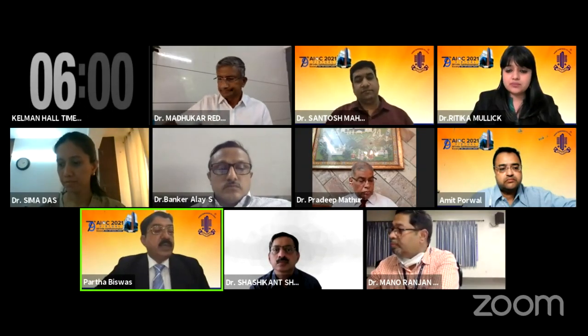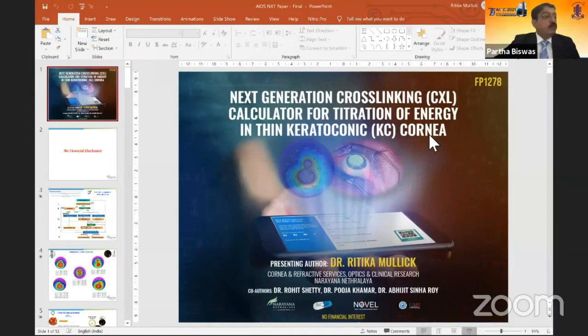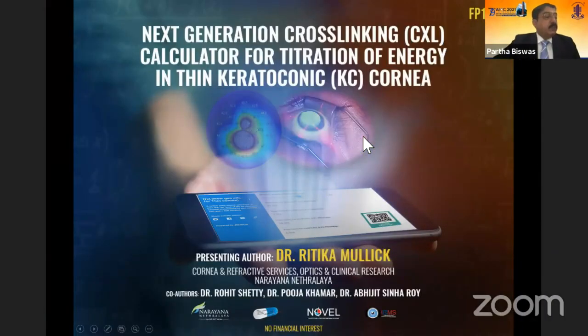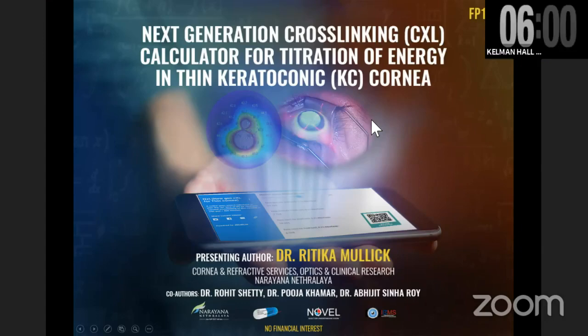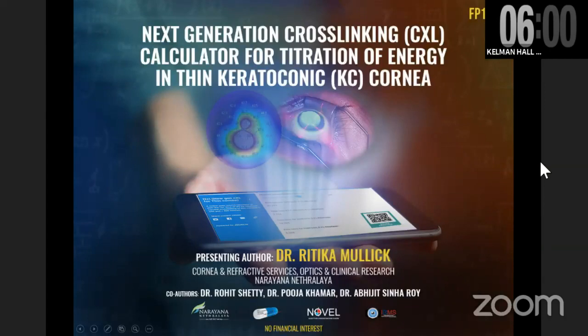We go on to the next paper by Dr. Hrithika Malik, registration number R-23525, free paper number 1278: Next Generation Crosslinking Calculator for Titration of Energy in Thin Keratoconic Cornea.